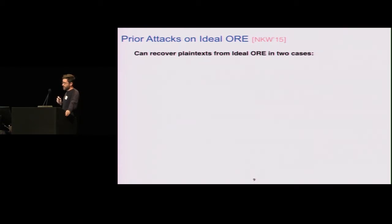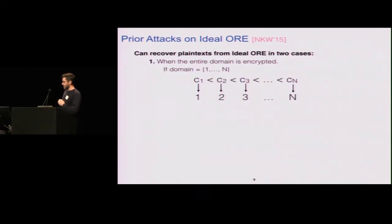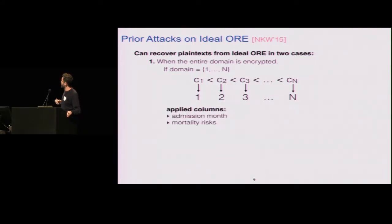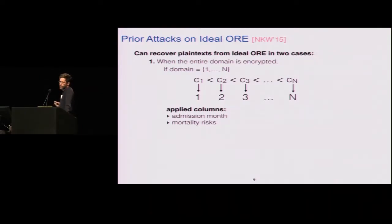The first is that if you encrypt the entire plaintext domain — say days of the year — it's a problem. You get the ciphertexts, you know the plaintext domain is 1 through N, you have N ciphertexts, you sort them, and now you know what the plaintexts are. They experimented with some medical data and showed that, for example, admission month in a column could make this happen.